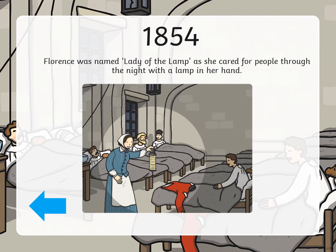Also in 1854, Florence was named the Lady of the Lamp. Remember, a lamp is a light. In the picture, Florence is holding a light — she cared for people through the night with a lamp in her hand, so she was always working.